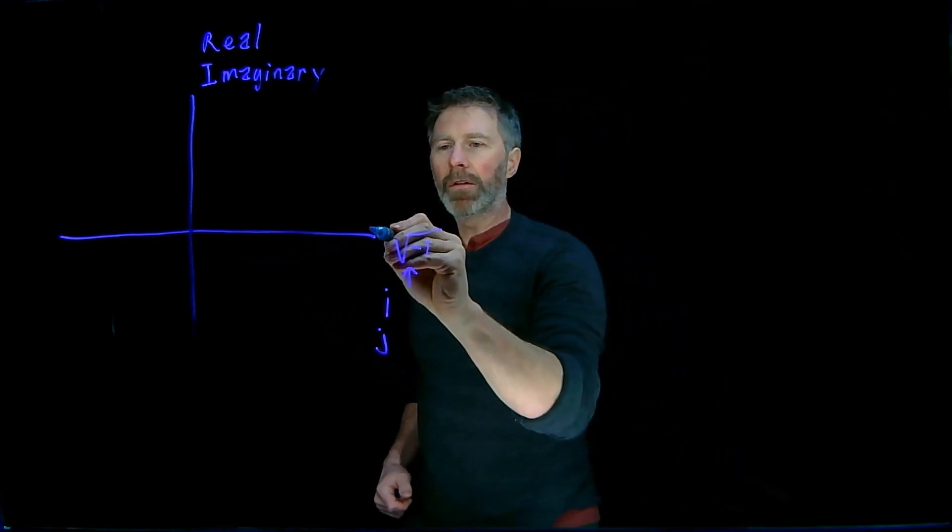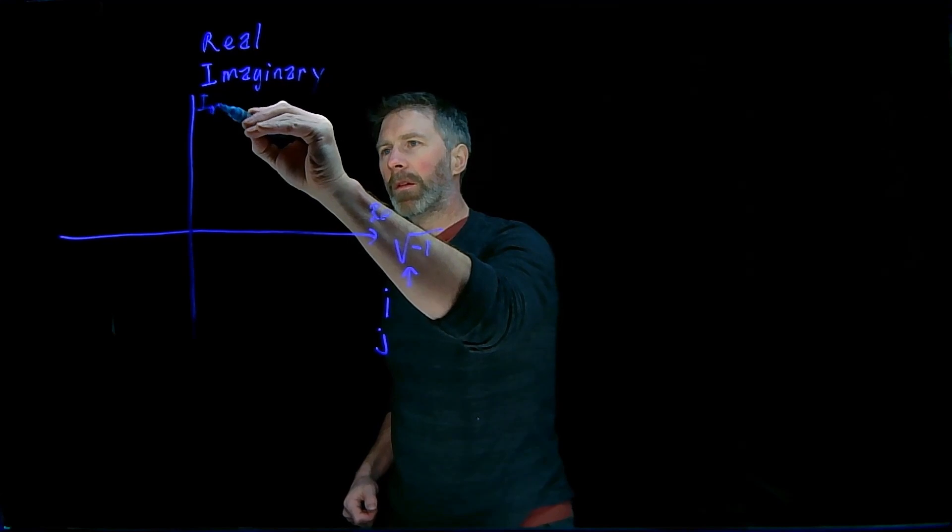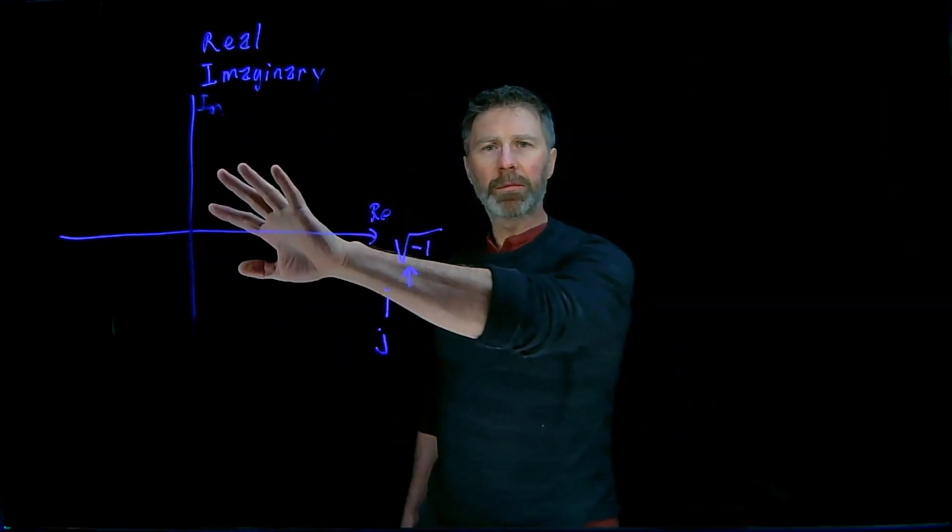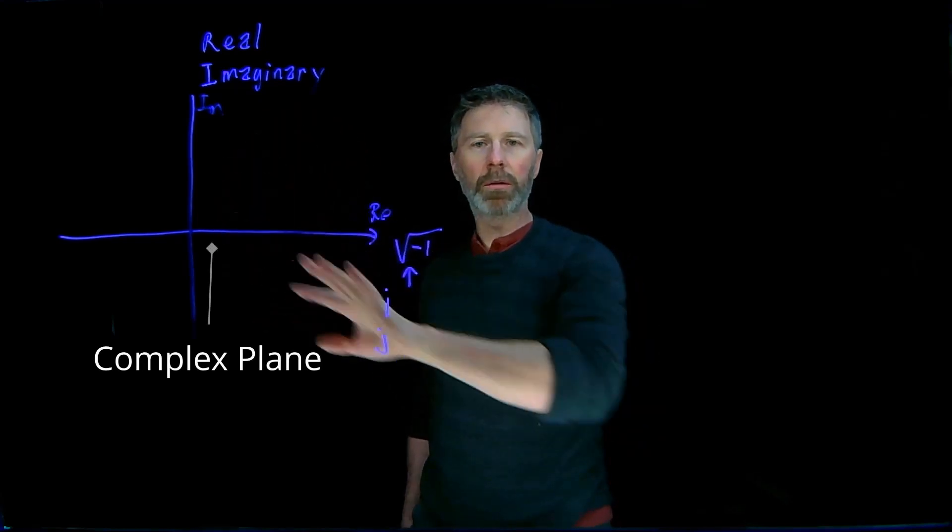And this combination of the real part and the imaginary part makes up a number plane. And this number plane, or Cartesian plane, is called the complex plane when we're dealing with these complex numbers.